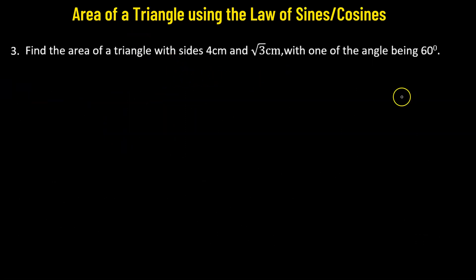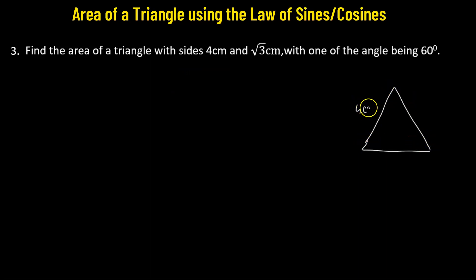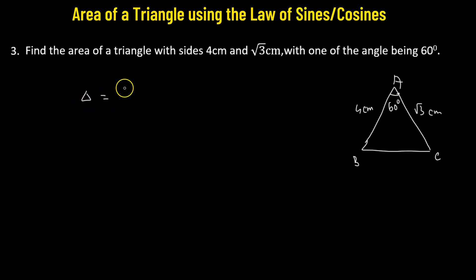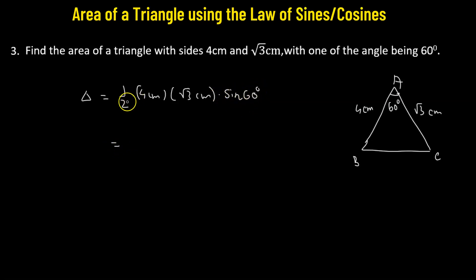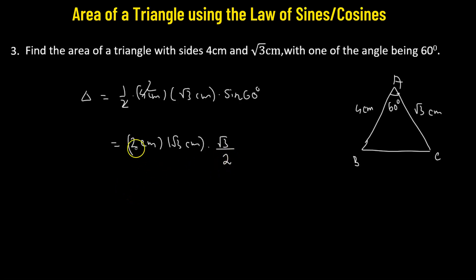Problem number three: a triangle has sides 4 cm and √3 cm. We assume triangle ABC where AB = 4 cm and AC = √3 cm, with the included angle of 60°. The area equals half times 4 times √3 times sine 60°, which is 2 times √3 times (√3/2). That gives √3 times √3 = 3, so the area is 3 cm².